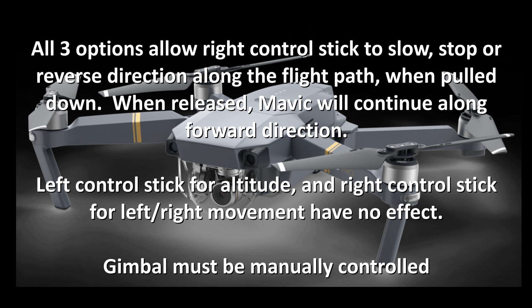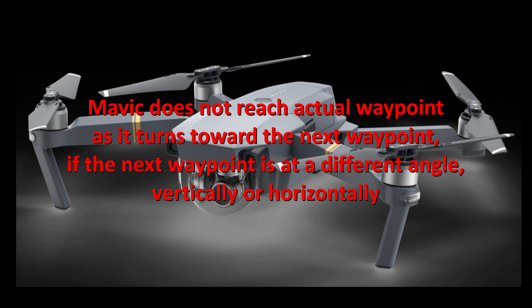All three options allow the right control stick to slow, stop, or reverse direction along the flight path when you pull the stick down. When you release the stick the Mavic will continue in the forward direction. Moving the stick forward doesn't seem to do anything — the speed is set by how you set the speed in the app. The left control stick for altitude and right control stick for left/right movement have no effect. The gimbal must be manually controlled.